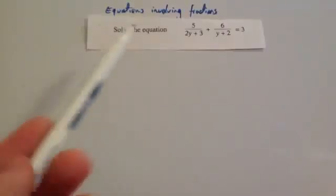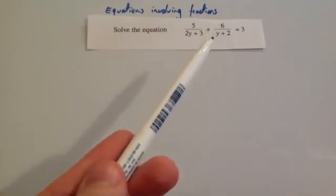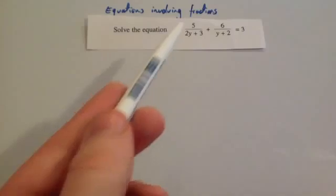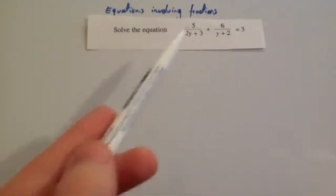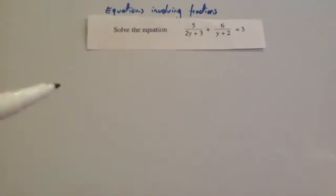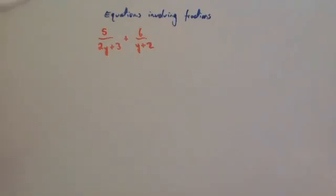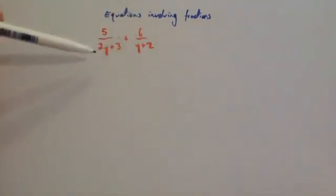This is our last question. We're going to do 5 divided by 2x plus 3, plus 6 divided by y plus 2, equals 3. Again, we want to simplify this left-hand side using algebraic fractions addition and work it out as a single term, then solve it. Before we do that, I'm going to simplify the fraction part first, then come back to the equation.